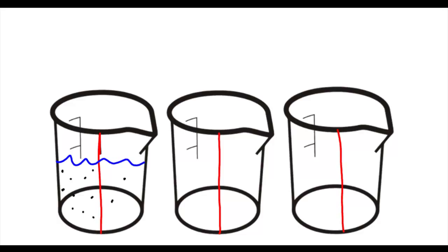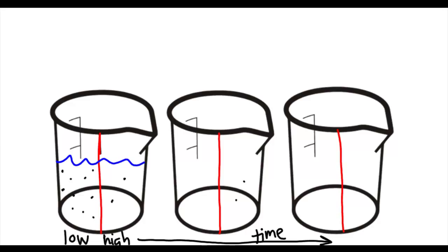On the right side of the membrane, we have a high concentration of solute molecules and a low concentration of solvent. Since osmosis deals with the movement of solvent, we have low solvent concentration on that side of the beaker. On the other side of the membrane, represented in red, we have a high solvent concentration and a relatively low solute concentration. The solute molecules are not moving.